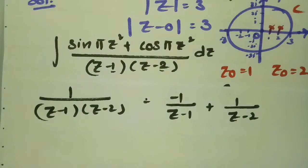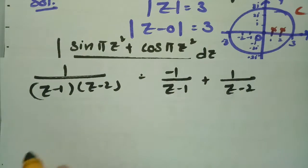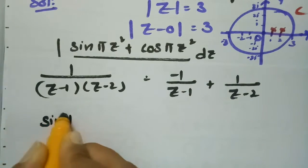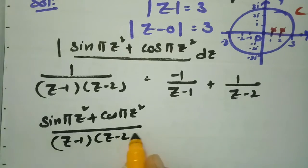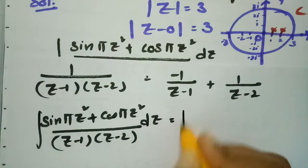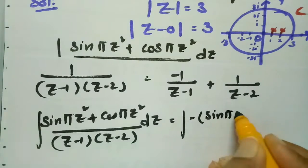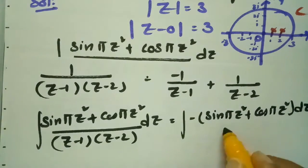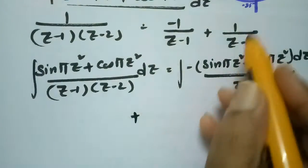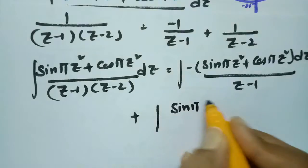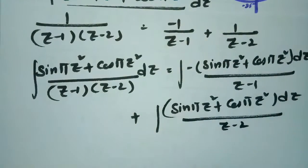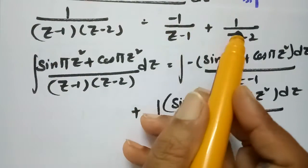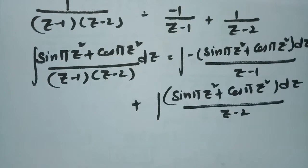Now I multiply both sides by sin(πz²) + cos(πz²) and integrate with respect to z. This gives: ∫[sin(πz²) + cos(πz²)]/(z−1)(z−2) dz = −∫[sin(πz²) + cos(πz²)]/(z−1) dz + ∫[sin(πz²) + cos(πz²)]/(z−2) dz.